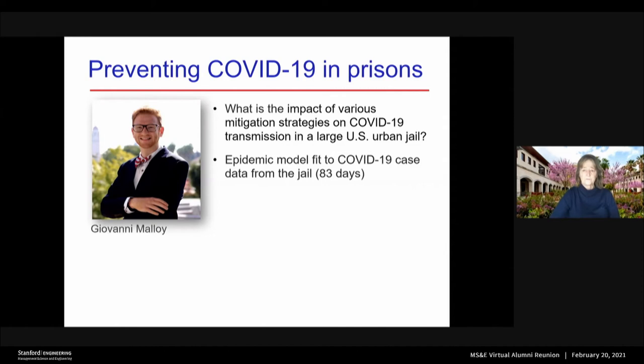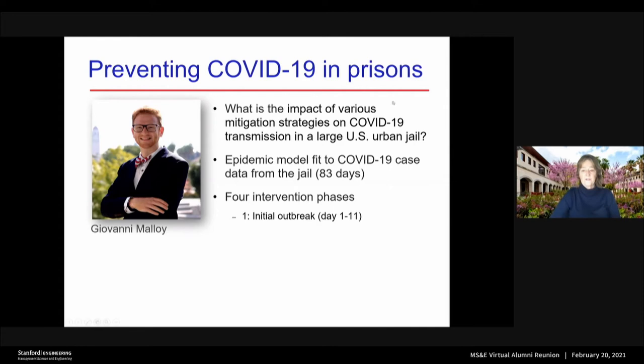They gave us data about strategies they've been using to mitigate COVID-19 and said, can you model the impact of these strategies? They gave us data for the first 83 days of their COVID-19 outbreak. Giovanni fit an epidemic model to their data. It turns out that their jail had four intervention phases over these 83 days. In the first 11 days, they didn't really know what was going on, so they followed CDC guidelines — wash hands, don't have too many visitors, wear masks. But when they realized they were starting to get an outbreak, they implemented various additional strategies.